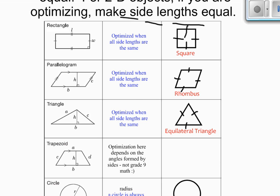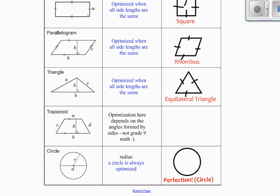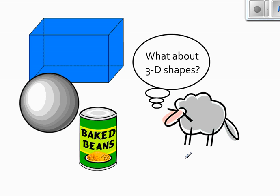Now for a trapezoid, well, things are a little different. Because a trapezoid kind of varies depends on what these angles are that we're talking about. And because of that, then we're not going to worry about any optimized trapezoids in grade 9. You'll have fun with those when you get to calculus one day, but not in grade 9. And what about a circle? Well, a circle is always optimized. It's the perfect shape.